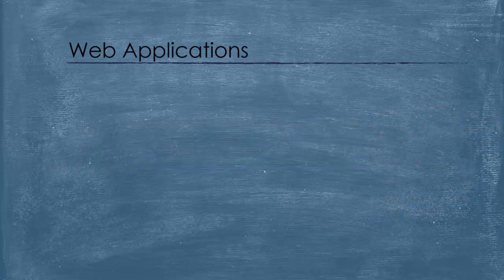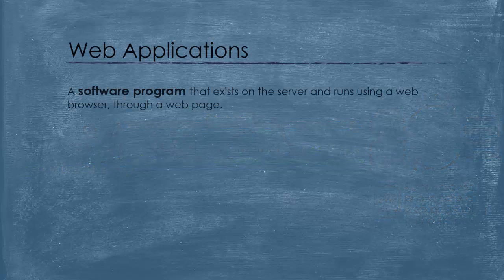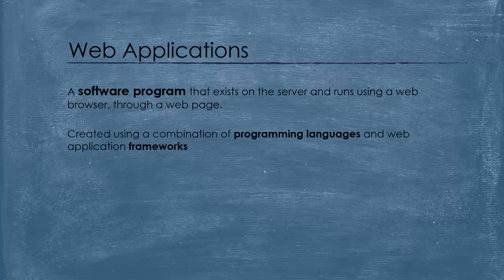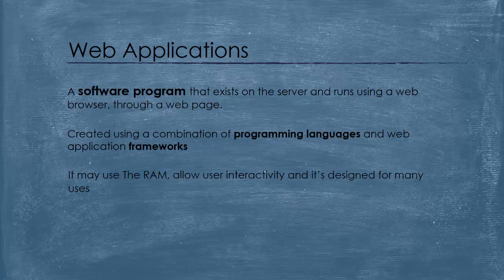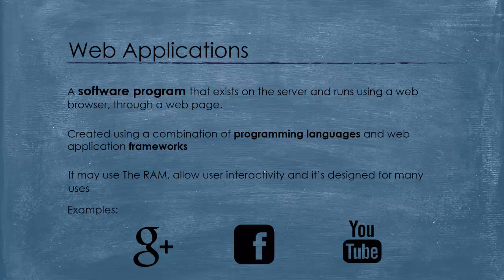Now let's talk about web applications. A web application is a software program that exists on the server and runs using a web browser through a web page. The application is similar to a desktop application. It is created using a combination of programming languages and web application frameworks. It may use RAM and allow user interactivity and it is designed for many uses. For example, Google Mail is an application, online auctions, Facebook, YouTube, online video editing, online spreadsheet, etc.